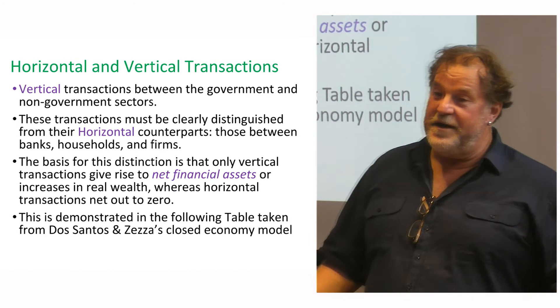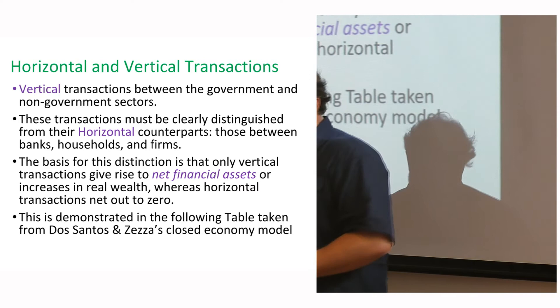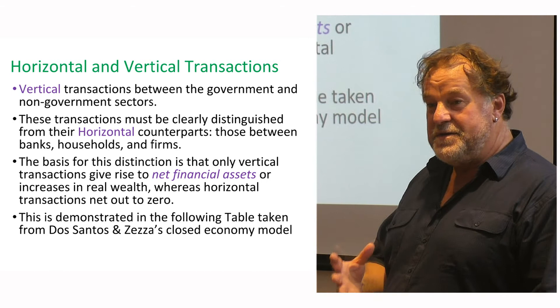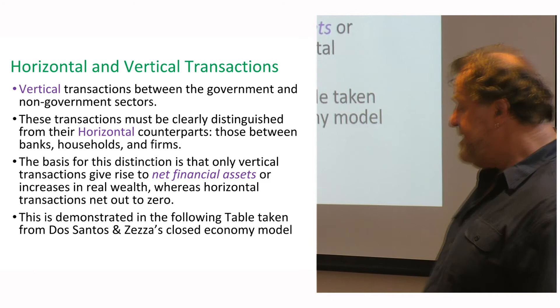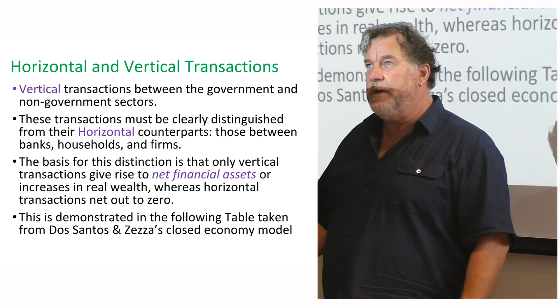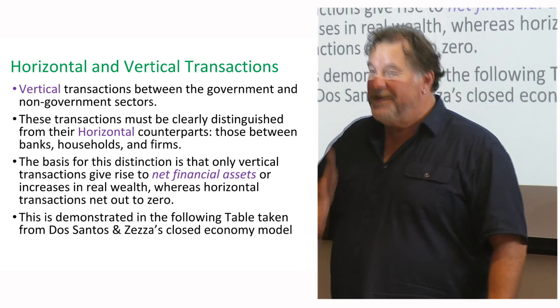China also has a shadow banking system that's very hard to control. One reason for the Hong Kong extradition treaty issue was that Hong Kong is probably one of the biggest avenues for leakage of income and stocks of assets out of China. Capital flight can be a huge problem the Chinese government is trying to control through negotiated arrangements with other nations.